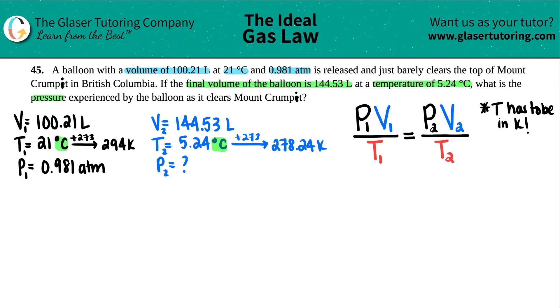We know how to convert to Kelvin - all we have to do is just plus 273. 273.15 to make it more specific, but I think this will do just fine. So 21 plus 273, I get 294 for the first temp in Kelvin. And then 5.24 plus 273, I get 278.24.